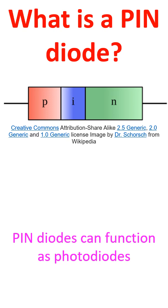The high frequency resistance is inversely proportional to the DC current bias given, so that if it is suitably biased, it can act as a variable resistor.